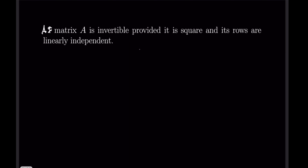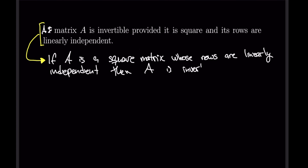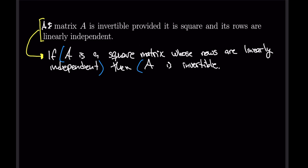'A matrix A is invertible provided that it is square and its rows are linearly independent.' This is another conditional, but not written in if-then format. Rewriting it: 'If A is a square matrix whose rows are linearly independent, then A is invertible.' Now we can visualize this as 'if something then something,' but notice the left-hand side is itself an AND statement — A is square AND the rows of A are linearly independent.